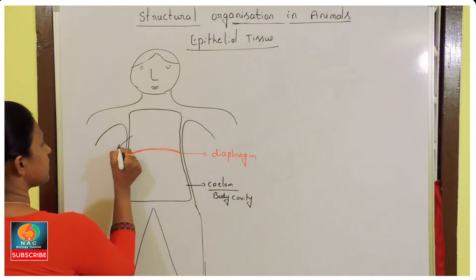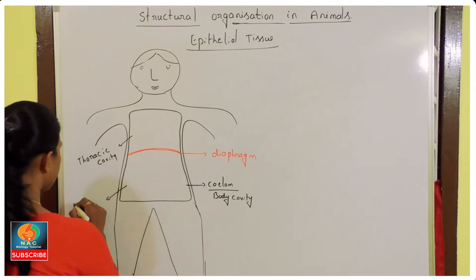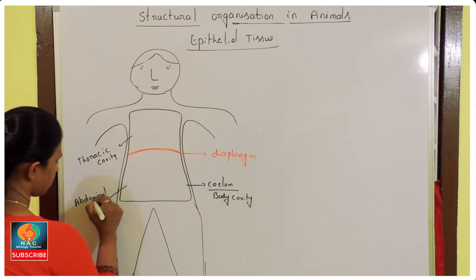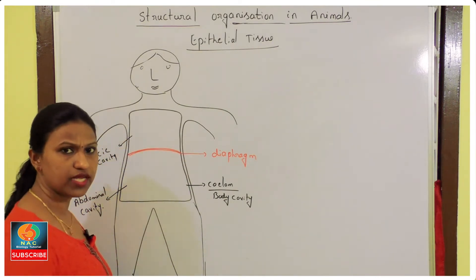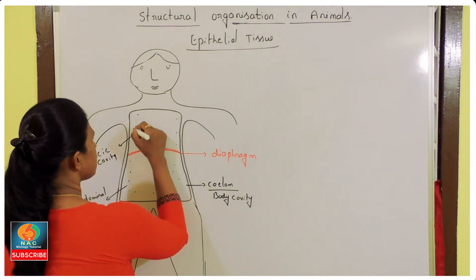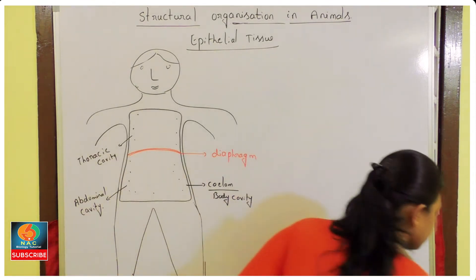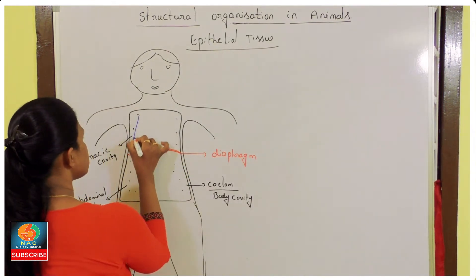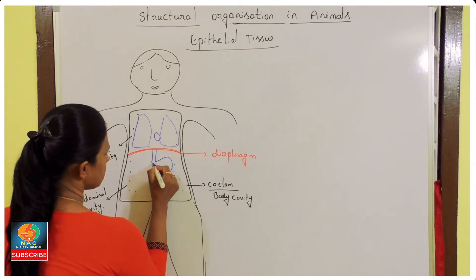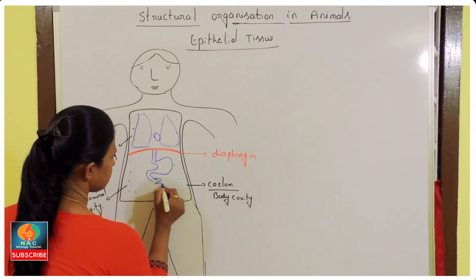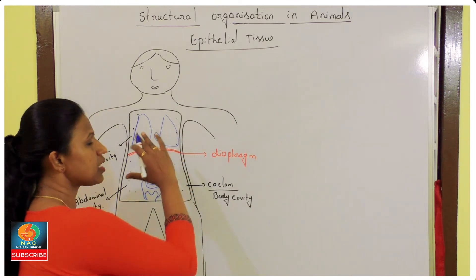Within the body cavity there is coelomic fluid present, and all the visceral organs are situated inside. In the thoracic cavity, lungs and heart are situated. In the abdominal cavity, we have the stomach, small intestine, and large intestine. This is how, within the body cavity, all these organs are situated firmly.